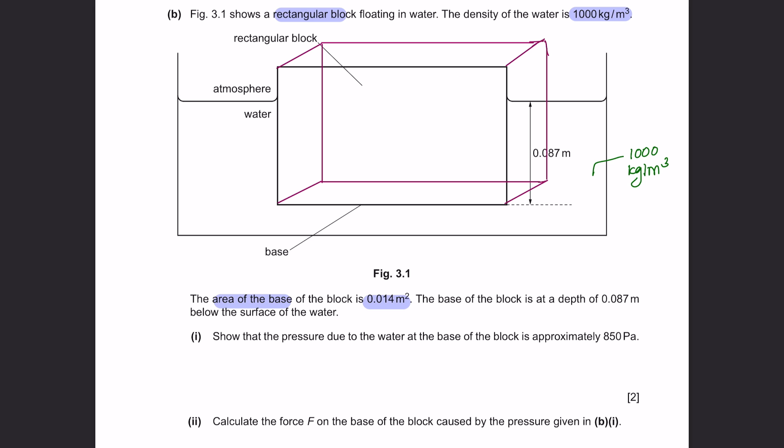If we were able to look at this in three-dimensional, this is the area of the base. The base of the block is at a depth of 0.087 meters, over here, below the surface of the water. Part 1: Show that the pressure due to the water at the base of the block is approximately 850 pascals.